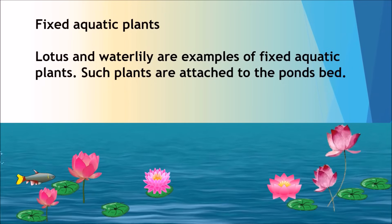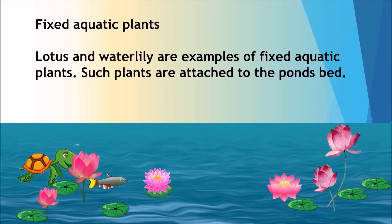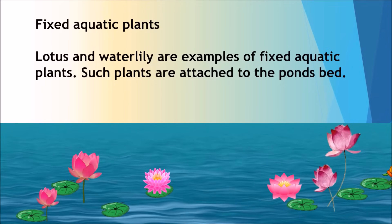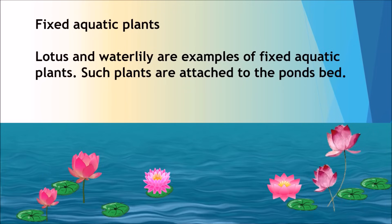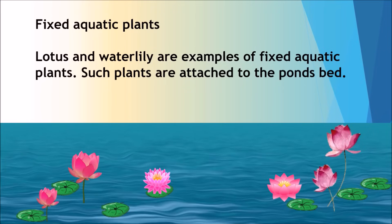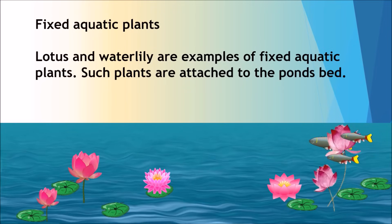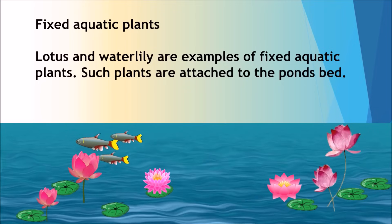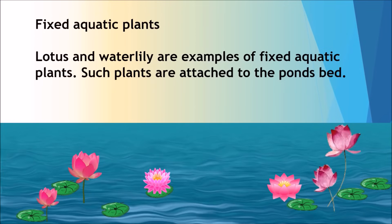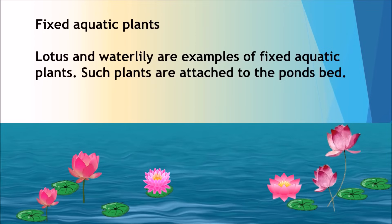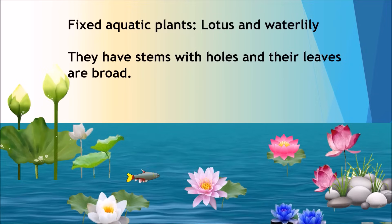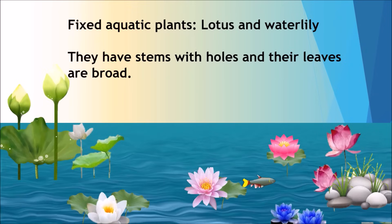Fixed Aquatic Plants: Lotus and Water Lily are examples of fixed aquatic plants. Such plants are attached to the pond's bed. They have stems with holes and their leaves are broad.